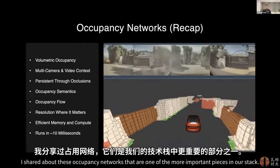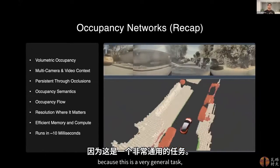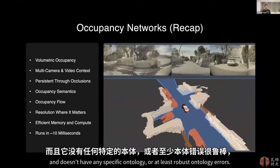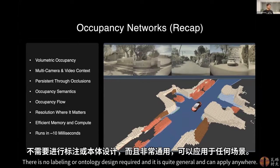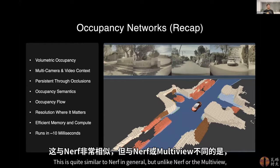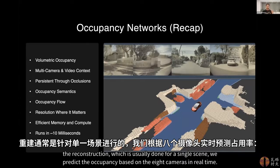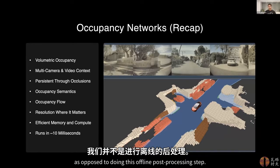I shared about occupancy networks, which are one of the more important pieces in our stack. I consider this one of the foundational model tasks because it's very general and doesn't have any specific ontology, or at least is robust to ontology errors. It really just predicts whether some voxel in 3D space is occupied or not and the probability of that. It can represent arbitrary scenes — no labeling or ontology design required. In addition to occupancy, we also predict the flow of voxels into the future, giving arbitrary motion as well, and everything runs in real time.